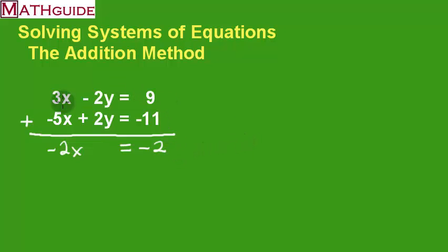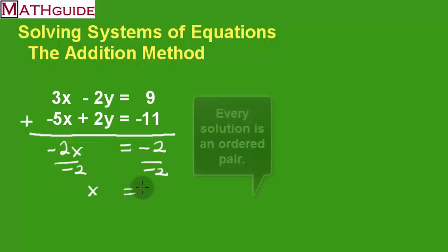Okay, so you can see that once I've added, I now have an equation that's a single variable. It just has the x. So I could clearly solve this for x by dividing both sides by negative 2. So I'm getting x equals 1.